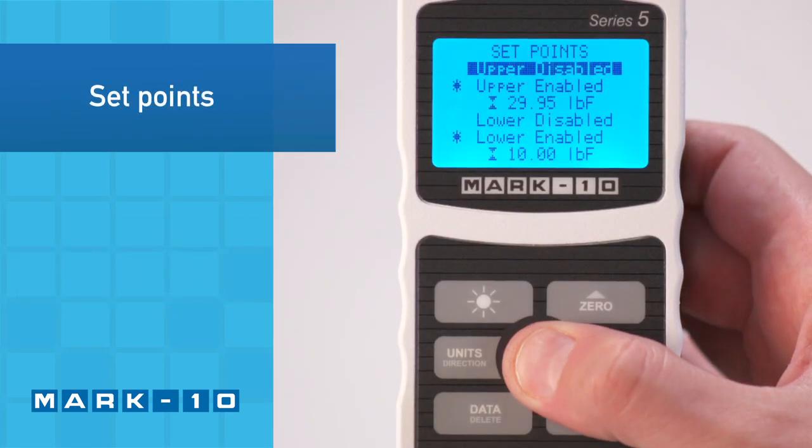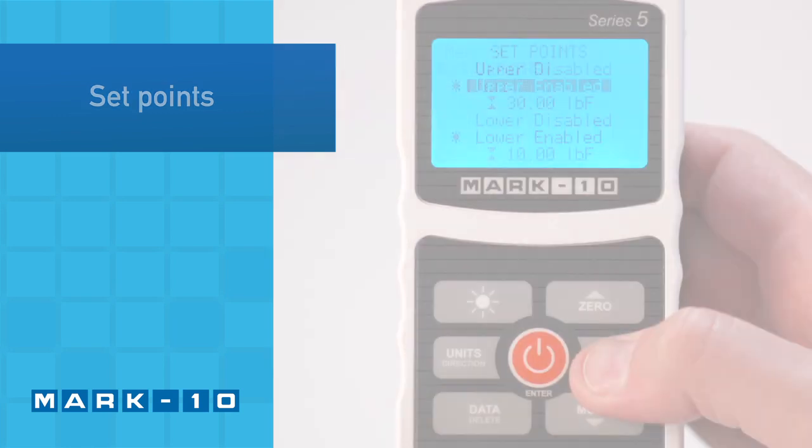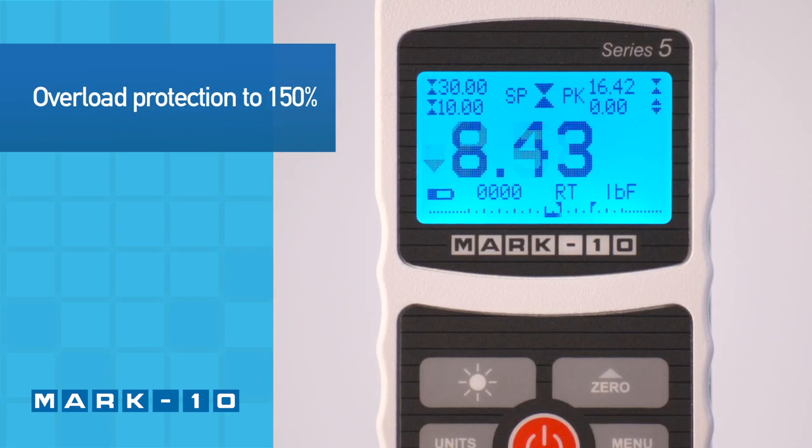Upper and lower set points, shown in the upper left corner, may be configured for pass-fail testing. The Force Gauge is overload-protected to 150% of its capacity.